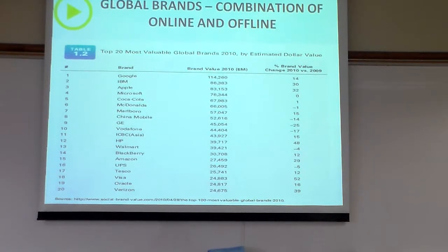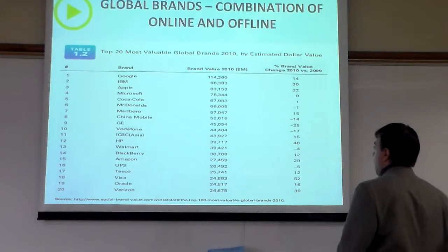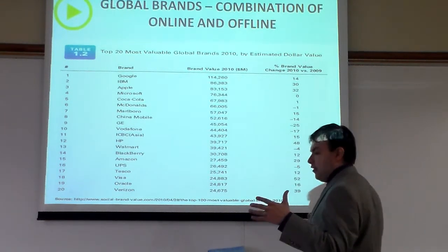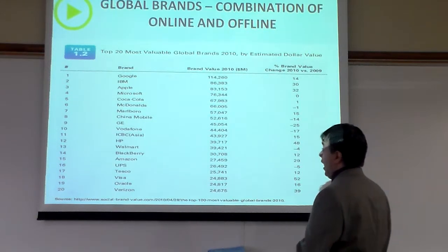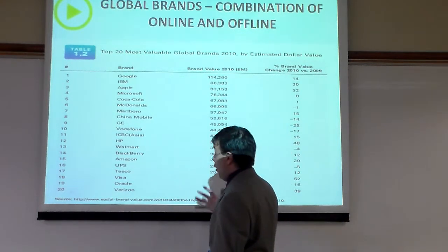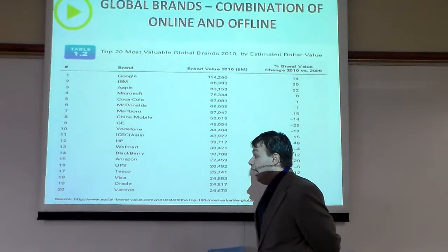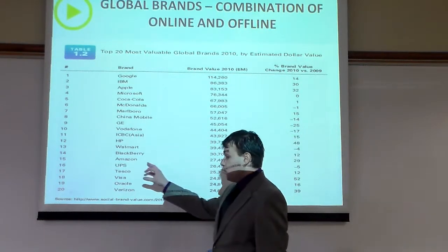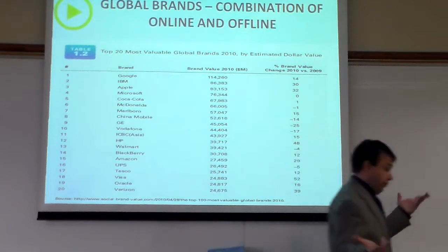Another idea is presented on page 10 of your textbook — the top 20 most valuable global brands. Notice the year is 2010; book authors tend to present statistics at the end of every decade because it aligns with census reports. Our biggest companies are Google, IBM, Apple, Microsoft, Coca-Cola, McDonald's, and Marlboro. I was intrigued that Amazon was ranked as low as 15 — I'd bet now Amazon is closer to the top of that list. But this evolves and changes all the time.